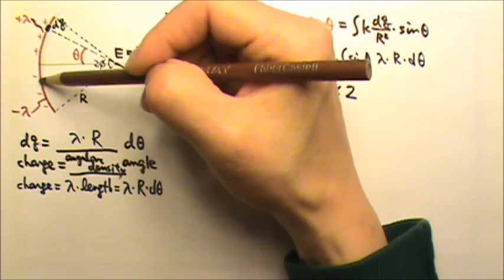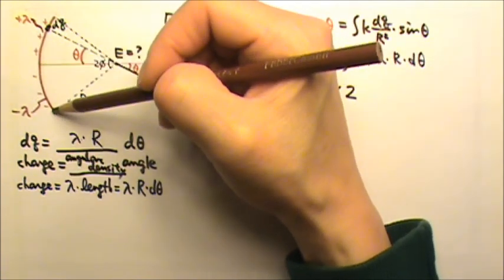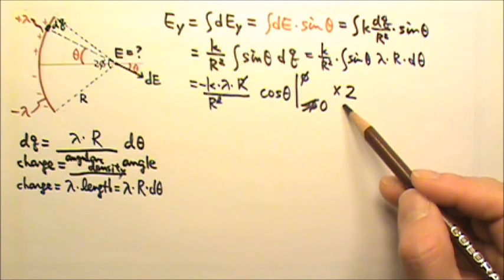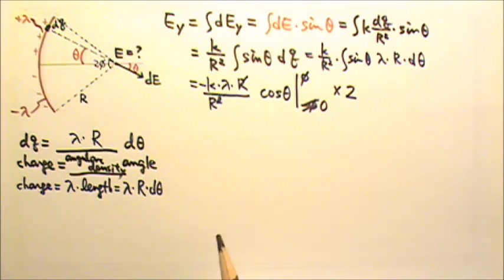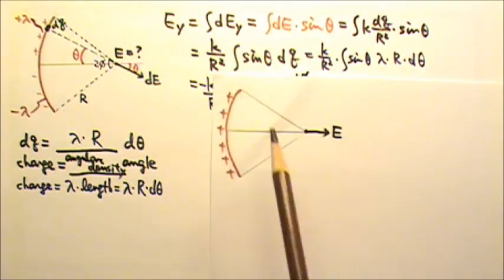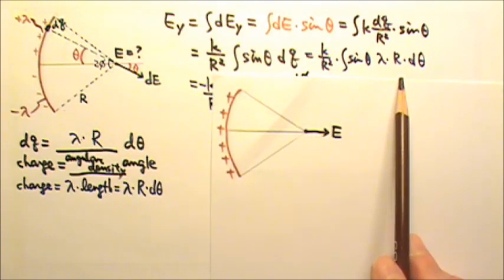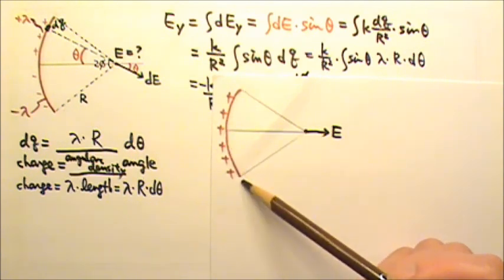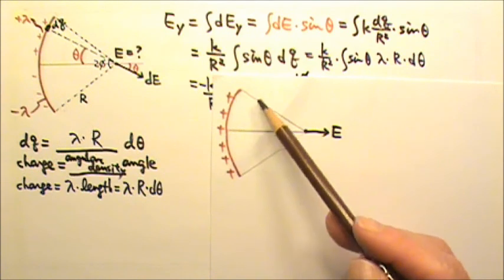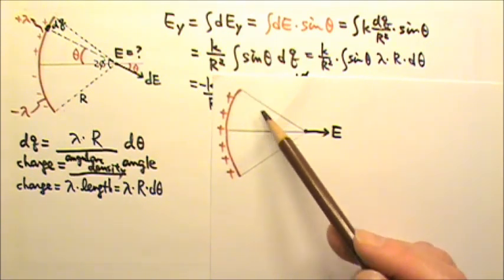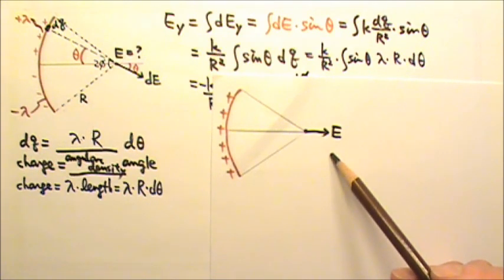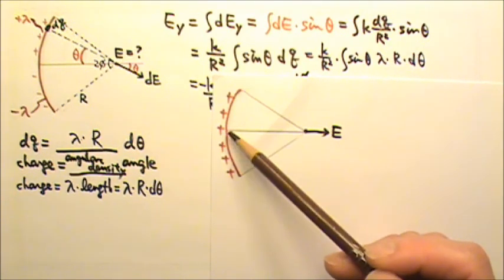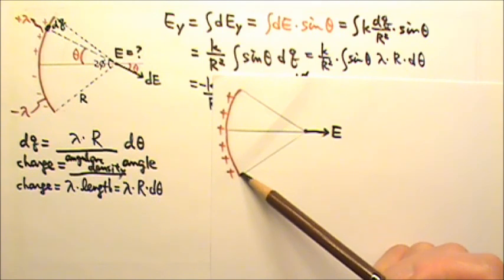The reason why integrating from negative φ to φ would give us 0 is because in this integration, we did everything exactly the same as if the entire arc of charge is positive. In that case, we do expect the y component of the electric field to be 0, because the y contribution from these two halves of the arc would cancel. So for this problem, we have to go from 0 to φ and then double.